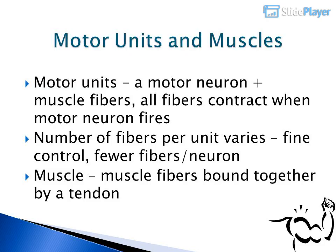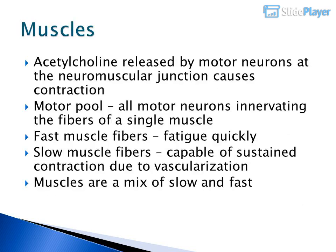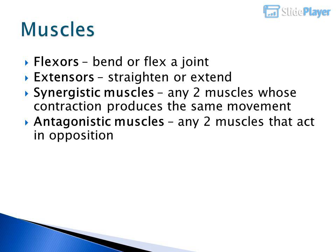Motor units consist of a motor neuron plus the muscle fibers it innervates; all fibers contract when the motor neuron fires. The number of fibers per unit varies — fine control requires fewer fibers per neuron. A muscle is muscle fibers bound together by a tendon. Acetylcholine released by motor neurons at the neuromuscular junction causes contraction. Fast muscle fibers fatigue quickly; slow muscle fibers are capable of sustained contraction due to vascularization. Muscles are a mix of both. Flexors bend or flex a joint; extensors straighten or extend. Synergistic muscles produce the same movement; antagonistic muscles act in opposition.